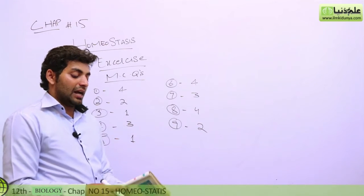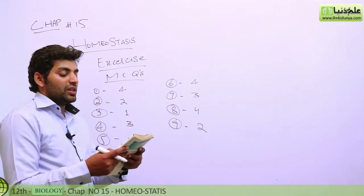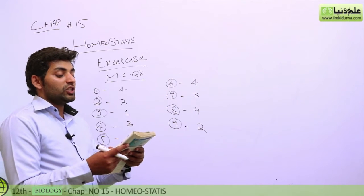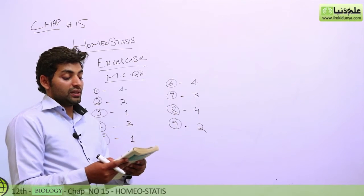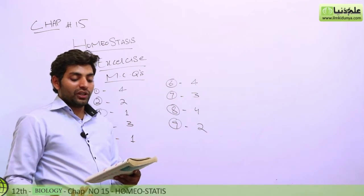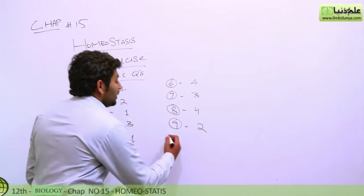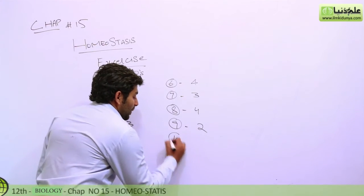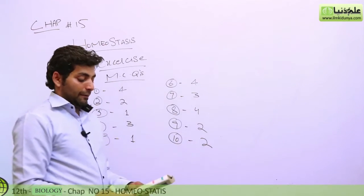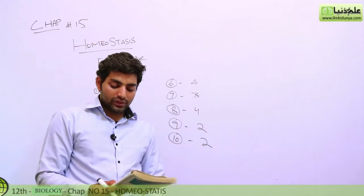The tenth and last MCQ asks: which type of adaptation is responsible for shivering thermogenesis? That is of course physiological adaptation. So the answer is option 2.